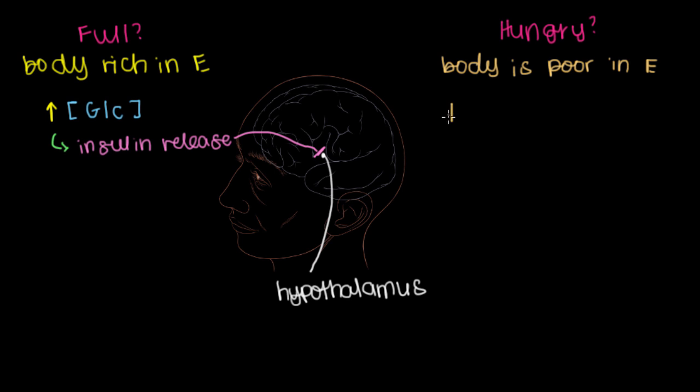Now on the flip side, if you have a low blood concentration of glucose, you're not going to be releasing insulin. And so you're not going to be inhibiting the hypothalamus.